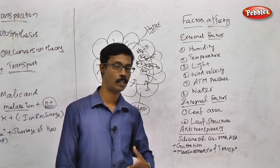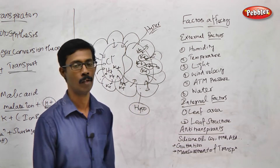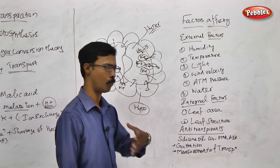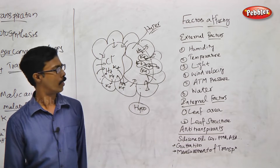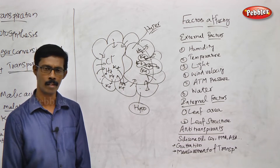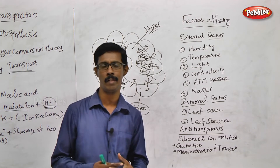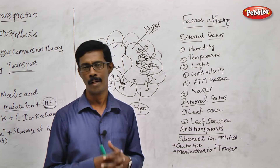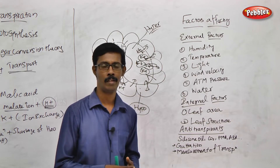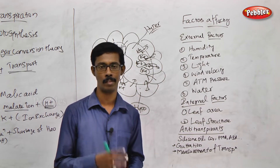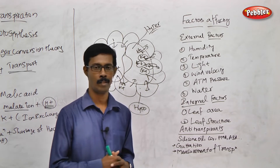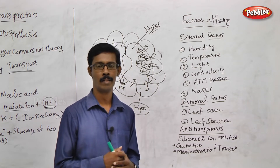The next factor is light intensity. Light intensity increases the transpiration rate. When light intensity is reduced, it reduces the transpiration rate. Another factor is wind velocity.